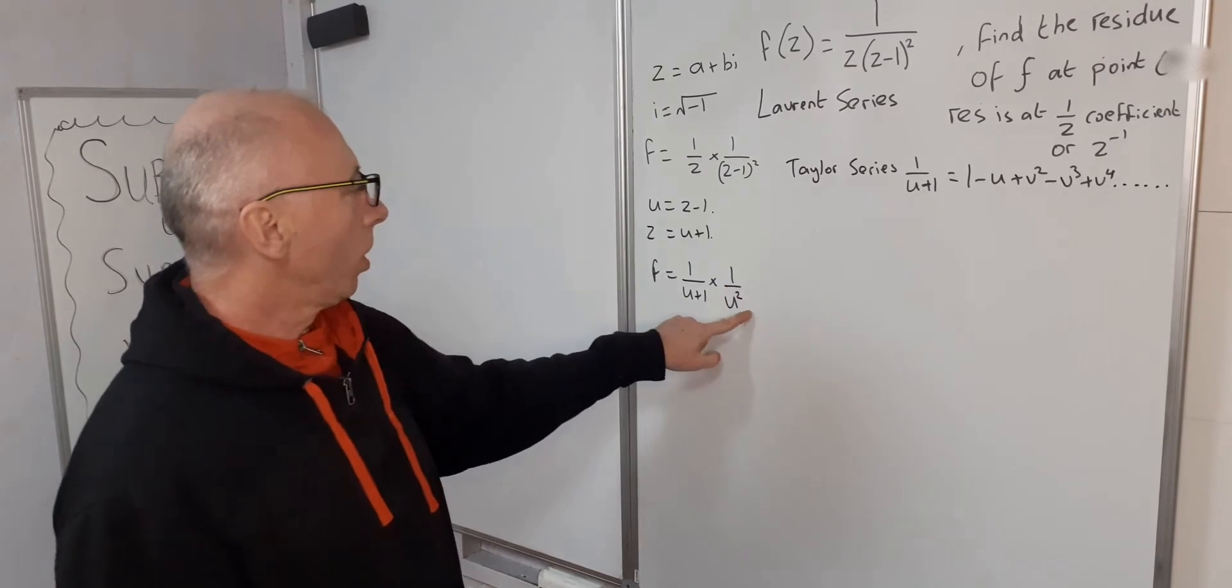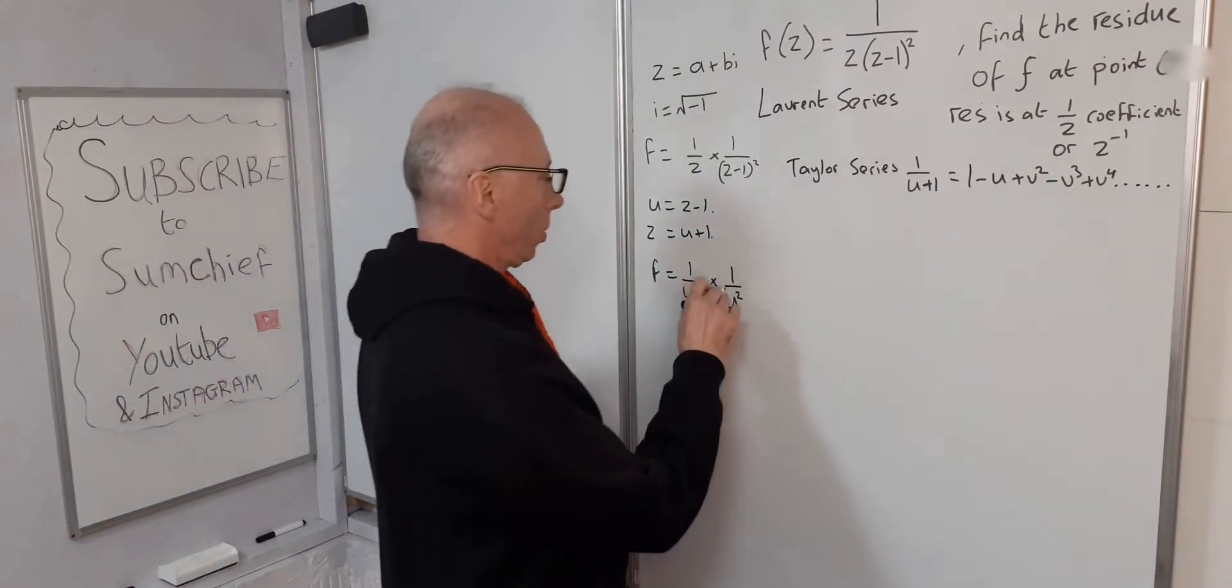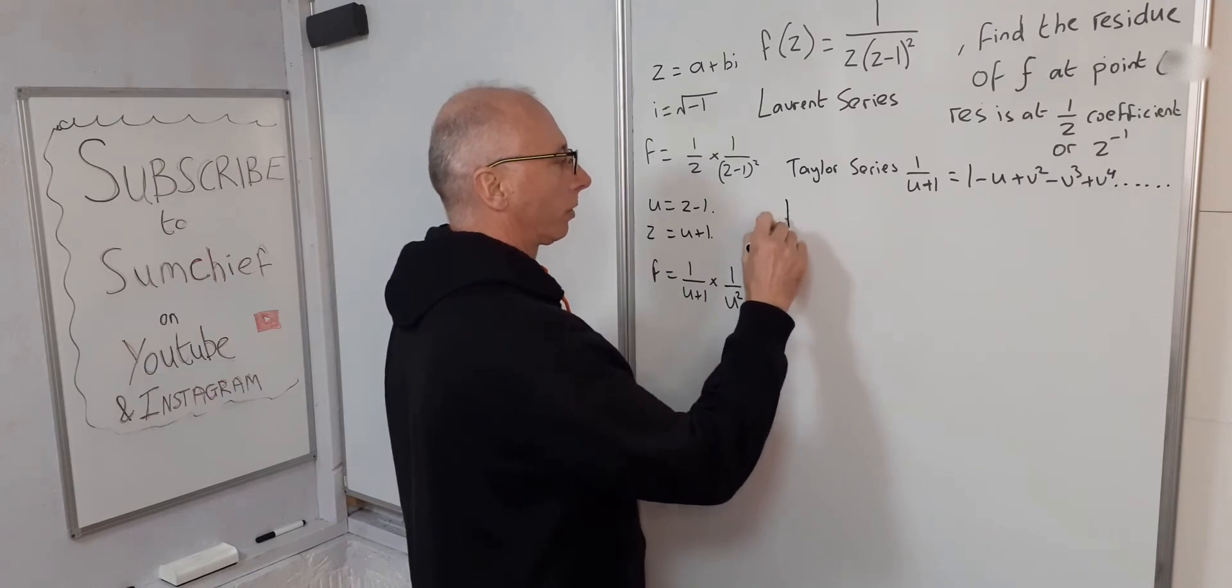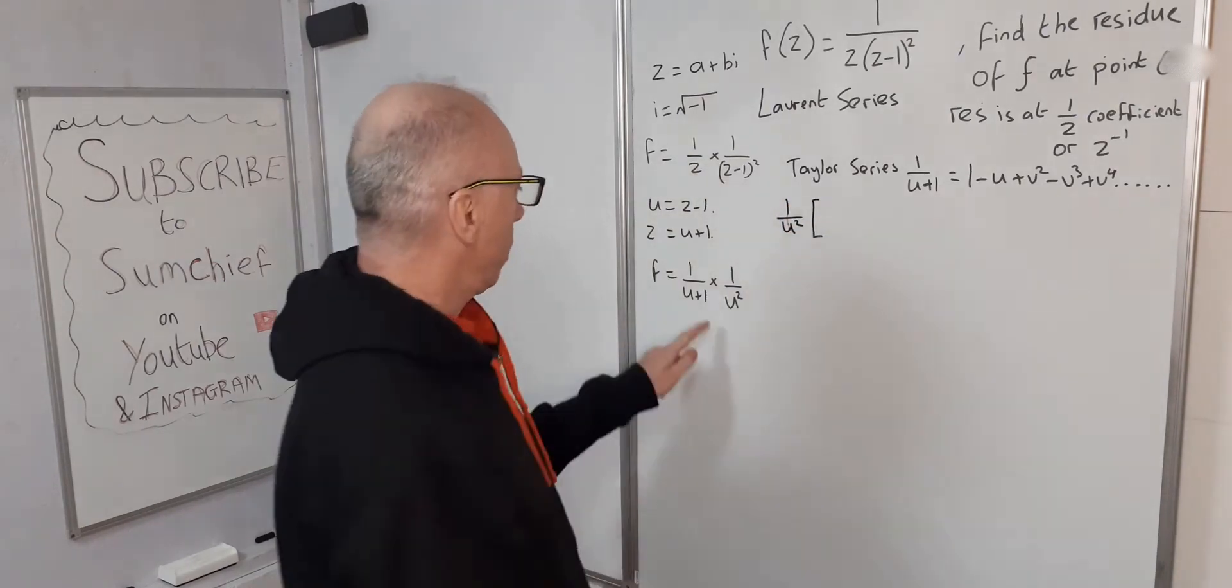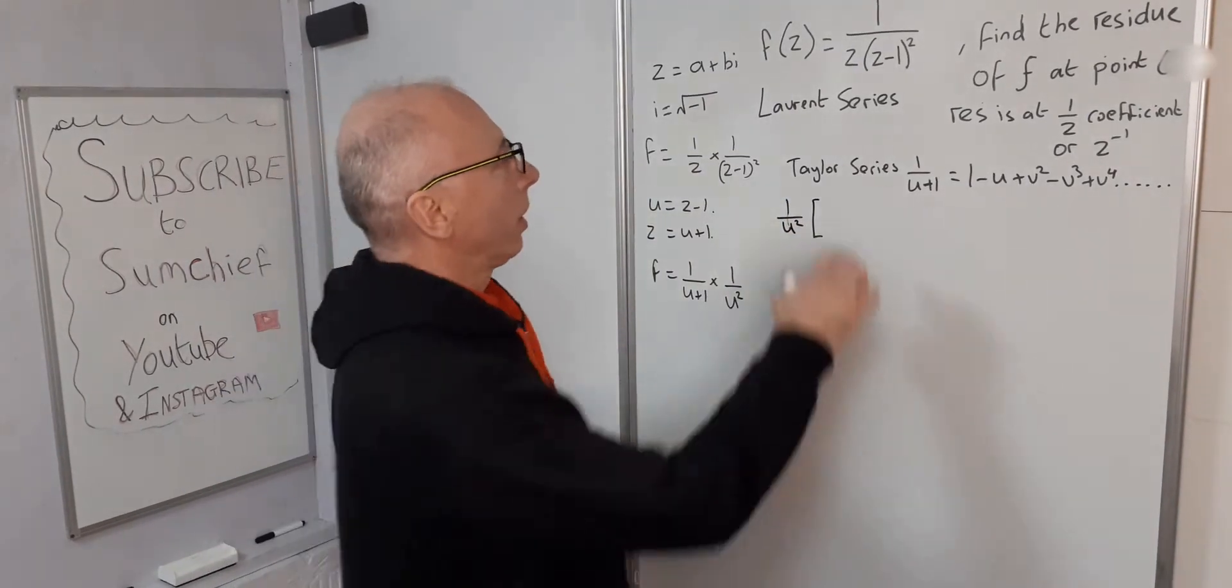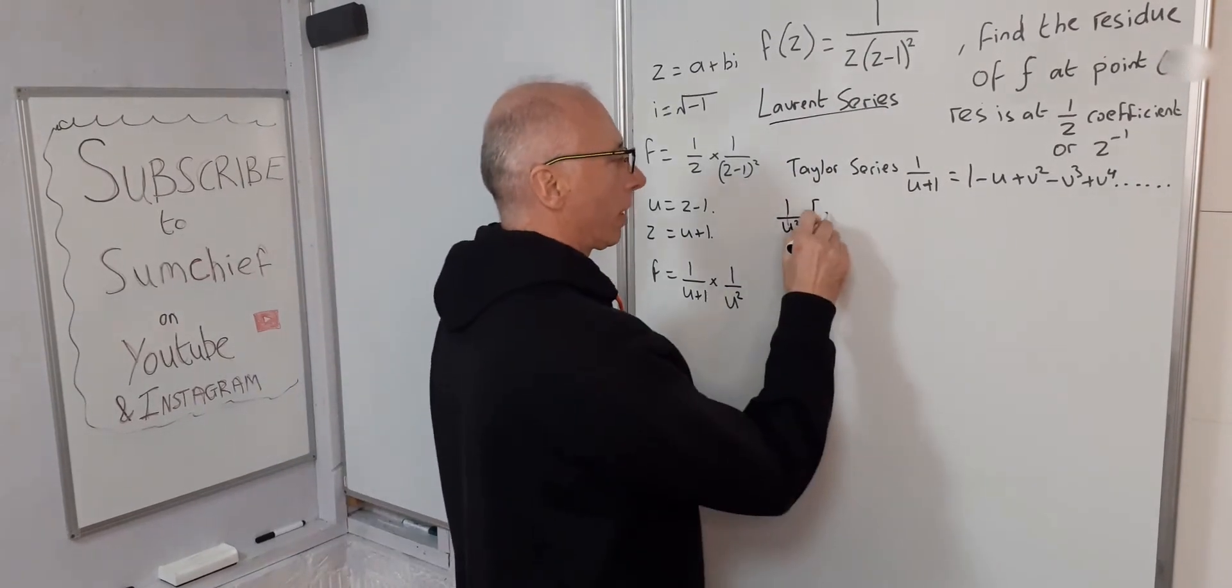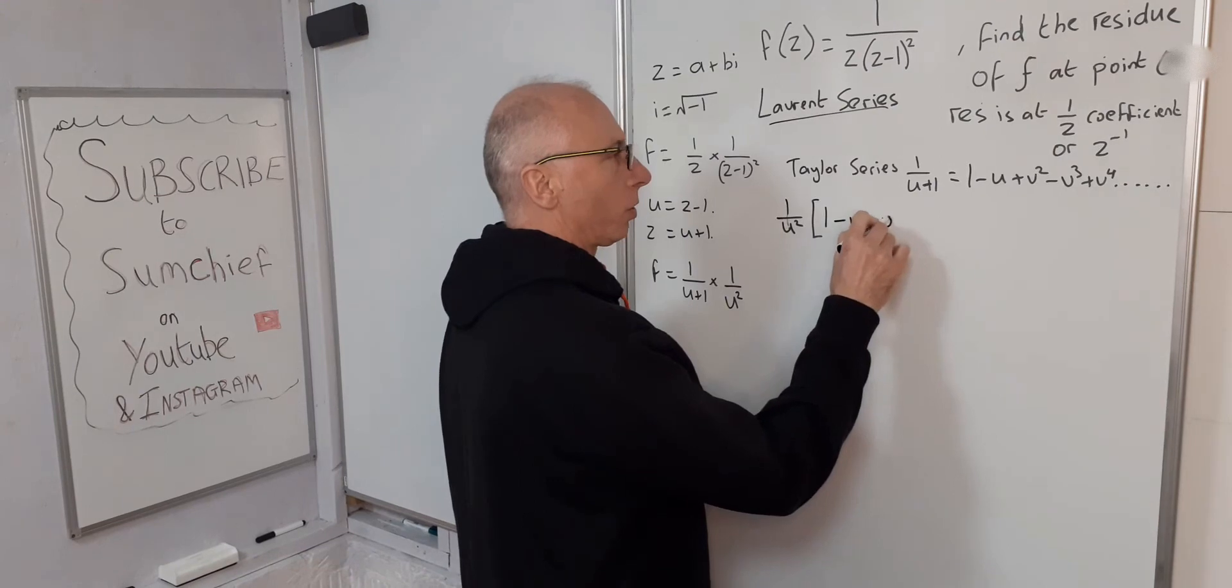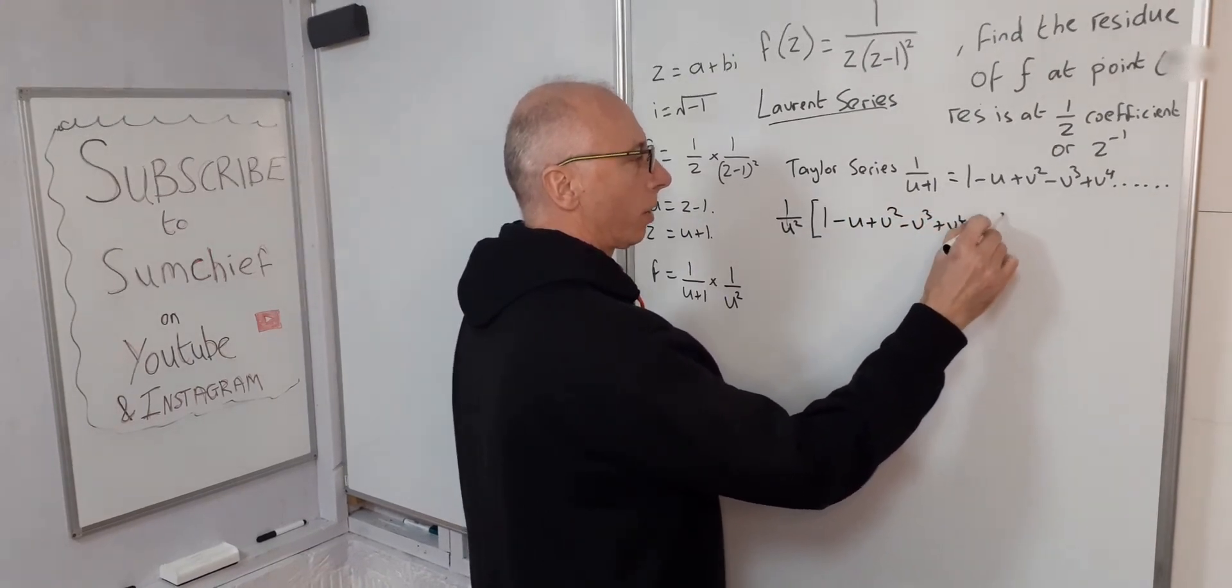Okay so we've got 1 over u plus 1. Now what we need to do is multiply it by 1 over u squared. So if we get 1 over u squared and multiply it by this Taylor series for 1 over u plus 1, that will give us our Laurent series. So 1 minus u plus u squared minus u cubed plus u to the 4 and so on.